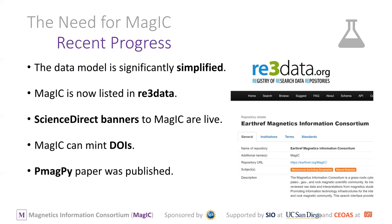MAGIC is now listed in the registry of research data repositories, RE3data. Science Direct has live banners to MAGIC. We can mint DOIs for datasets or for documents that describe the data. In MAGIC we have a record of a project or publication — the record of a particular dataset is linked to its publication, unlike some other databases. That is how you can recover those observations: through understanding where it was published and knowing what data formed the basis for that particular publication.